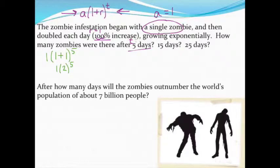Or just follow my advice and just type the whole thing in at once. Once I do this, I realize that after 5 days, there's going to be 32 zombies. Not many, but remember, exponential growth starts out really slow and then continues to increase very quickly as time goes on.